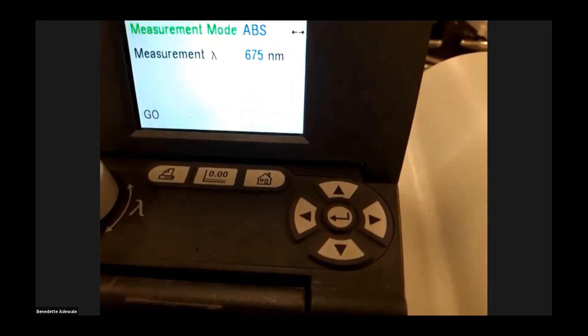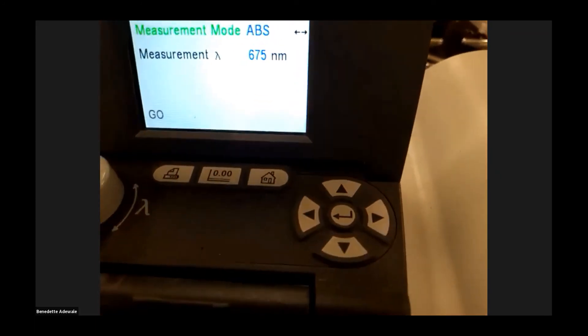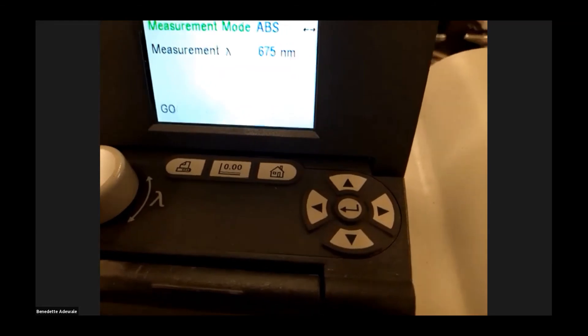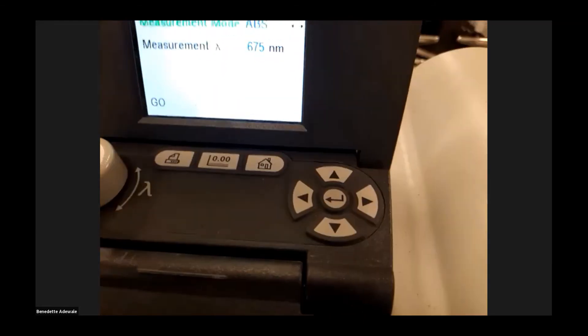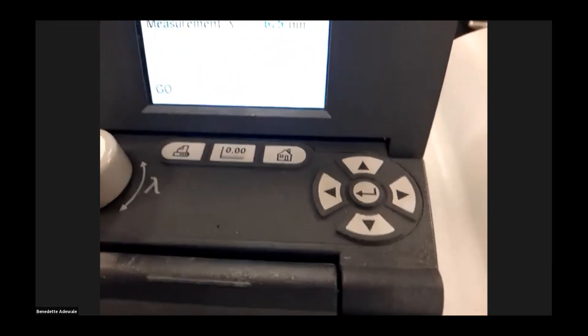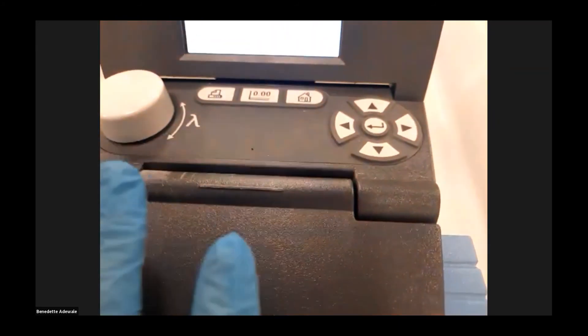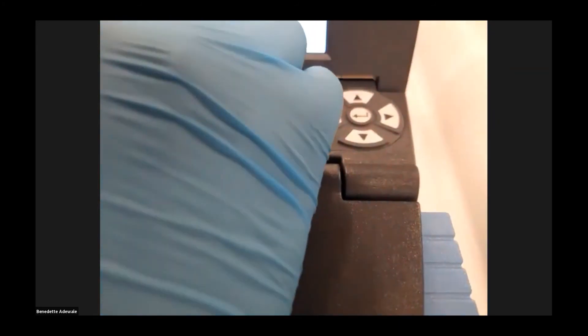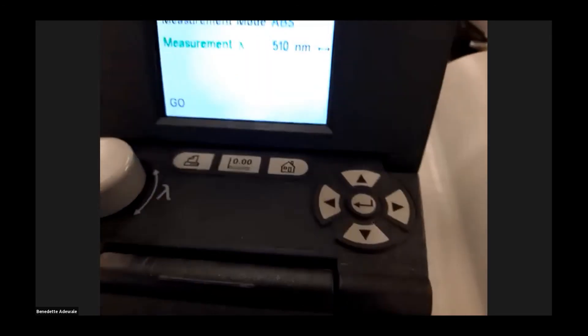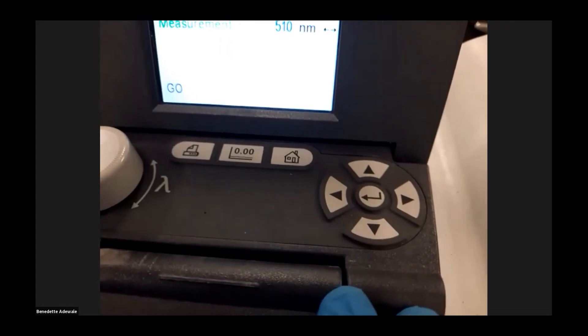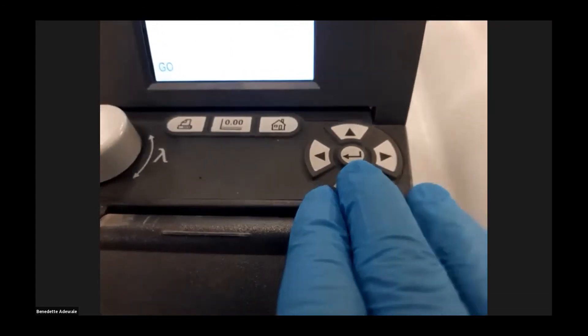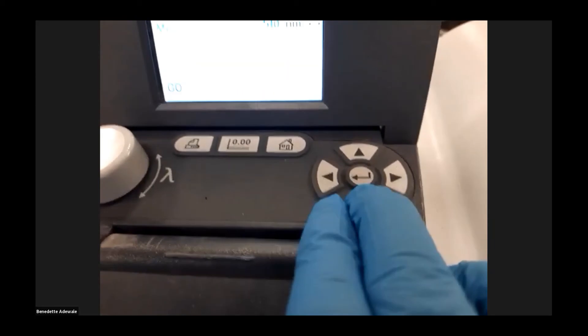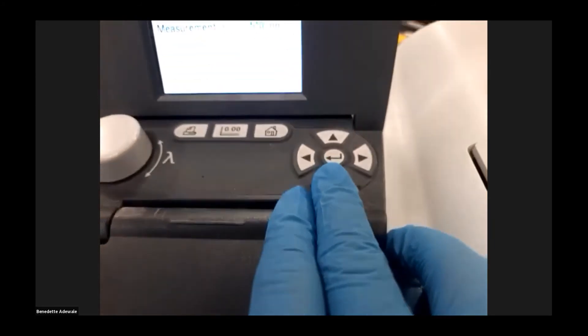In order to use the spectrophotometer, you need to know your wavelength. You have been given a wavelength of 510 nanometers. So you use the knob on the left-hand side to set it to 510 nanometers. Once you have your wavelength at 510 nanometers, then you press the lower arrow key, go, then you press enter.